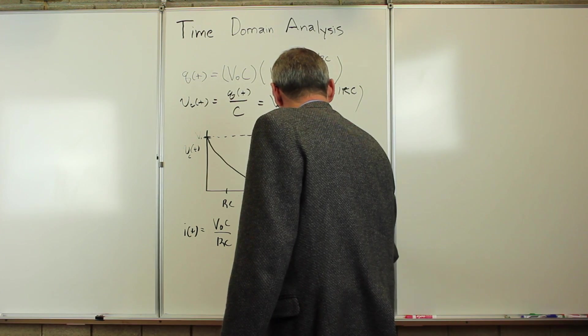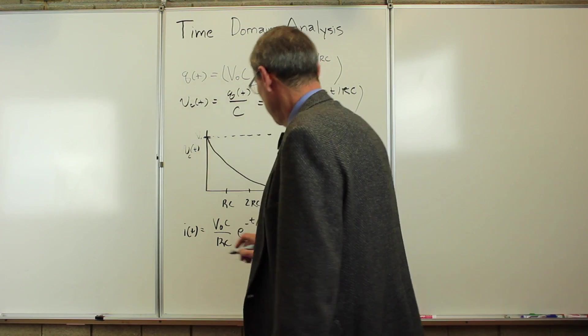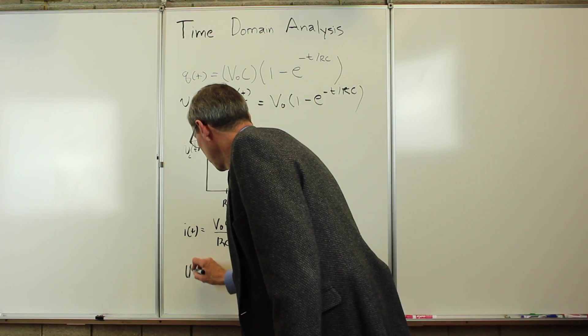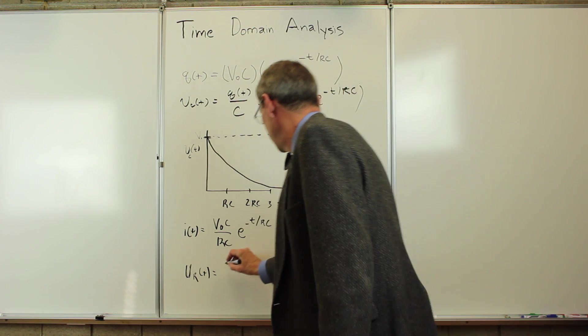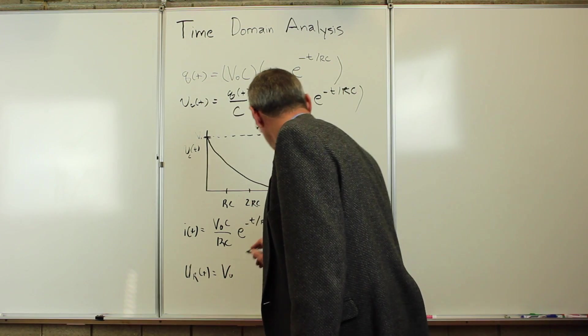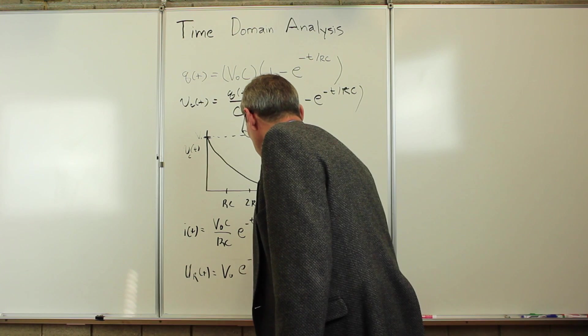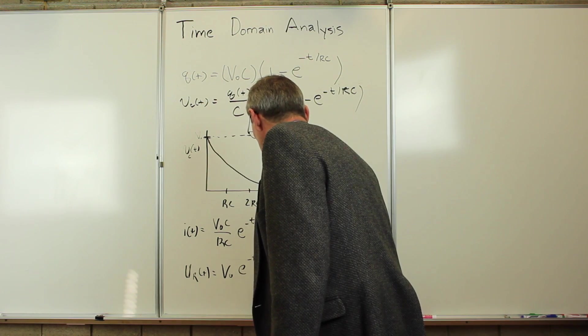So the voltage across the resistor as a function of time, it's just the resistance times this, it's again, same factor V0, not surprising, e to the minus t over RC.